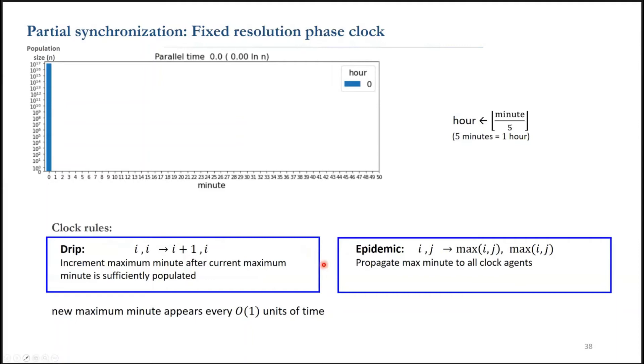Now, we combine constant minutes, for example, five, into an hour. So the agents spends constant time per hour.